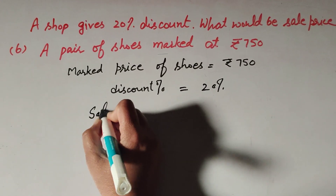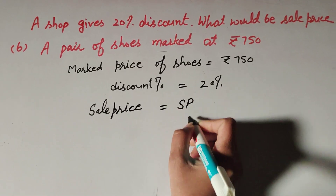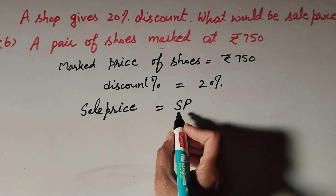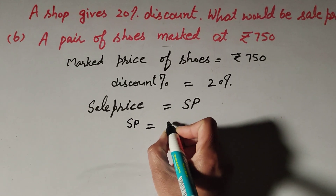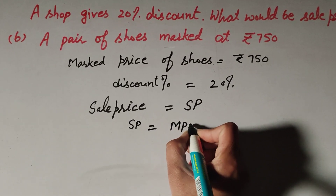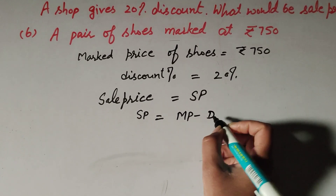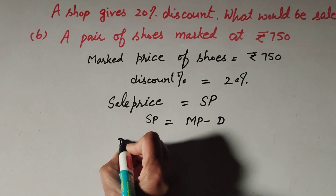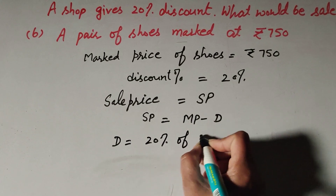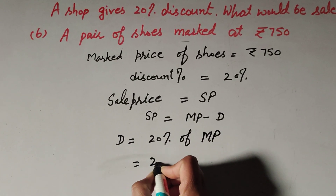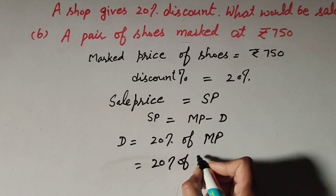We have to find the sale price, so let SP be the selling price. We know the formula: selling price equals marked price minus discount. To find SP we need the discount, but the given thing is discount percentage, so first we find discount. Discount is equal to 20 percent of marked price, which is 20 percent of 750.